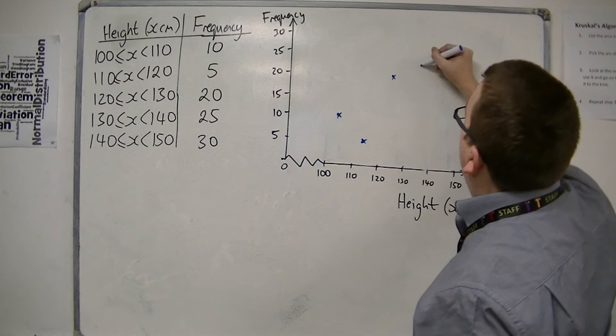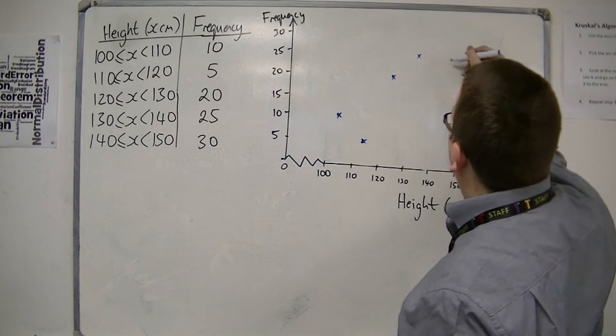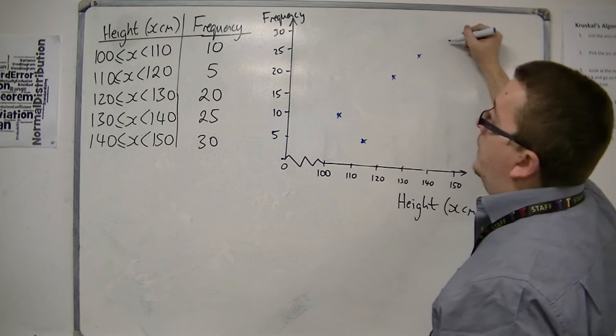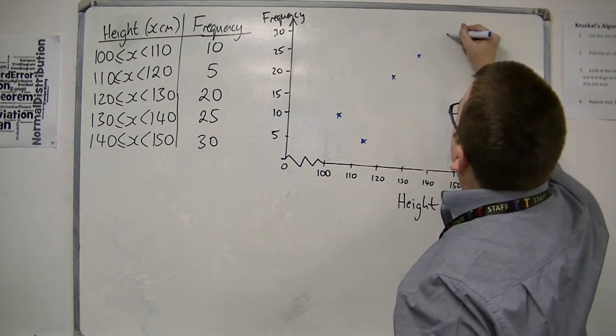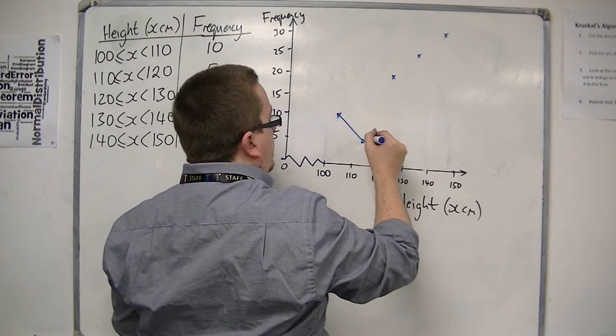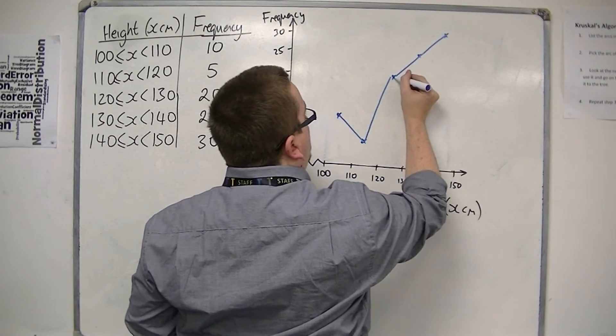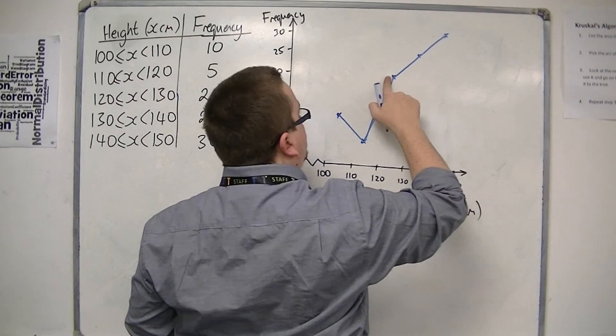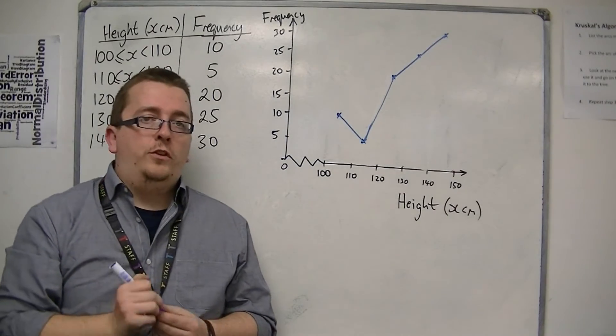And then 140 to 150 by 145, up at 30, so something like that. Then join your points. Didn't do that one very well. And that is the frequency polygon that you're looking for.